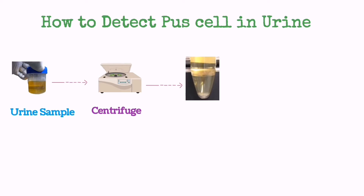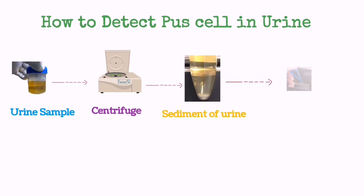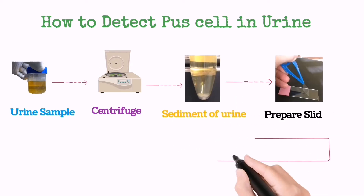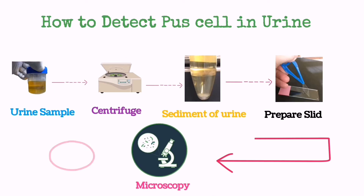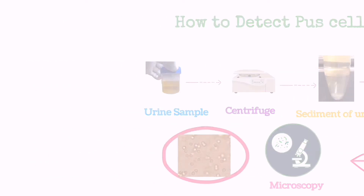Then centrifuge to get the sediment. After that, prepare a slide from the sediment and see through the microscope and count the pus cells.